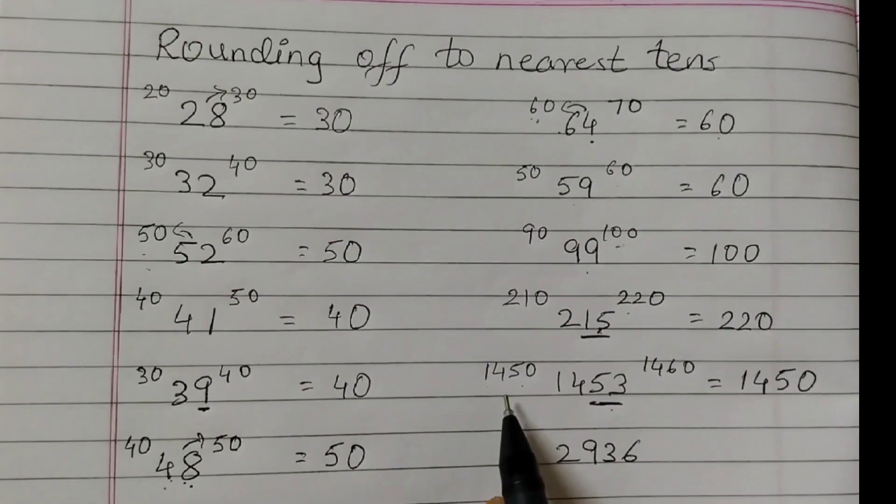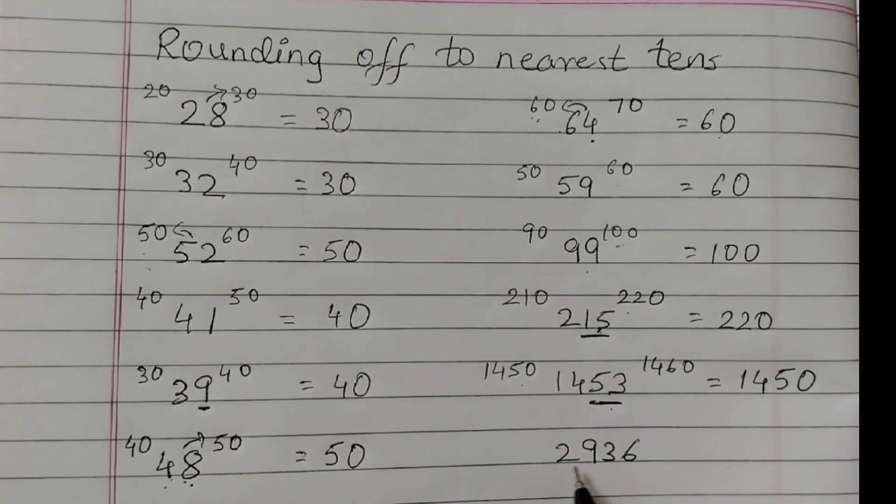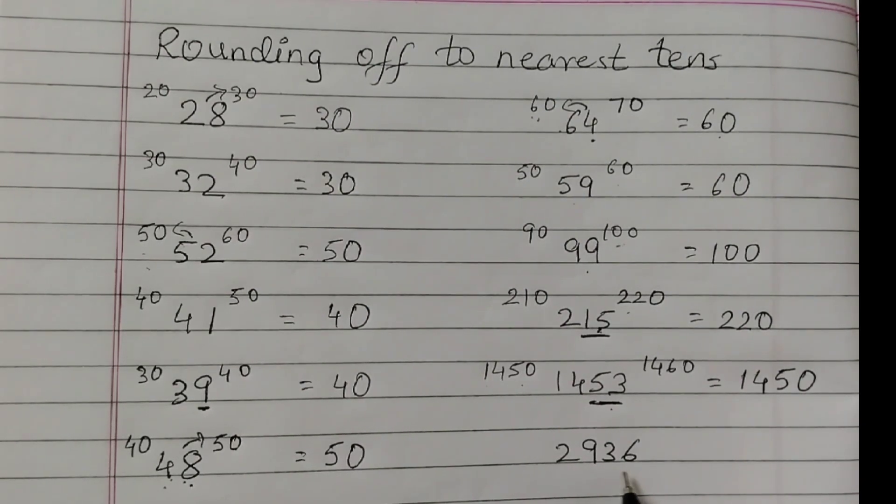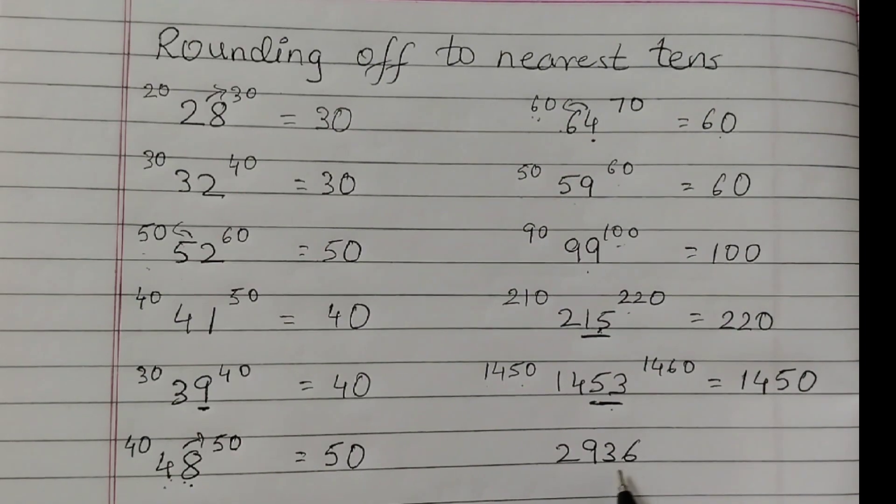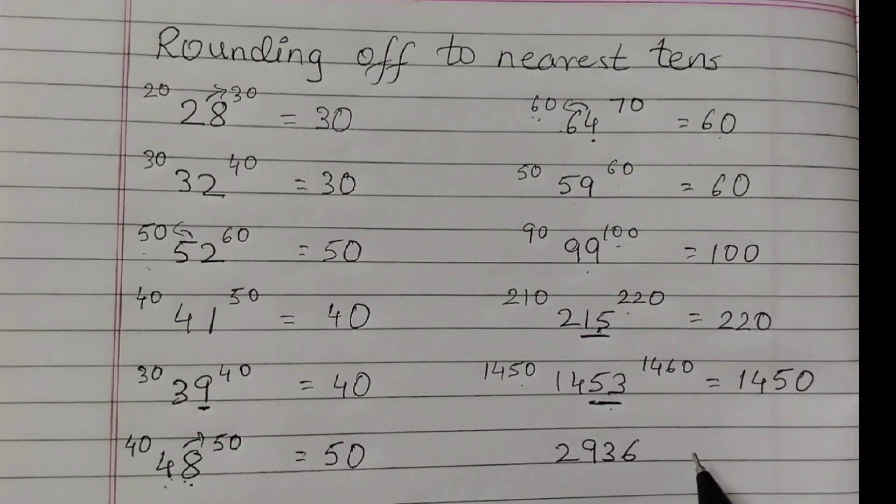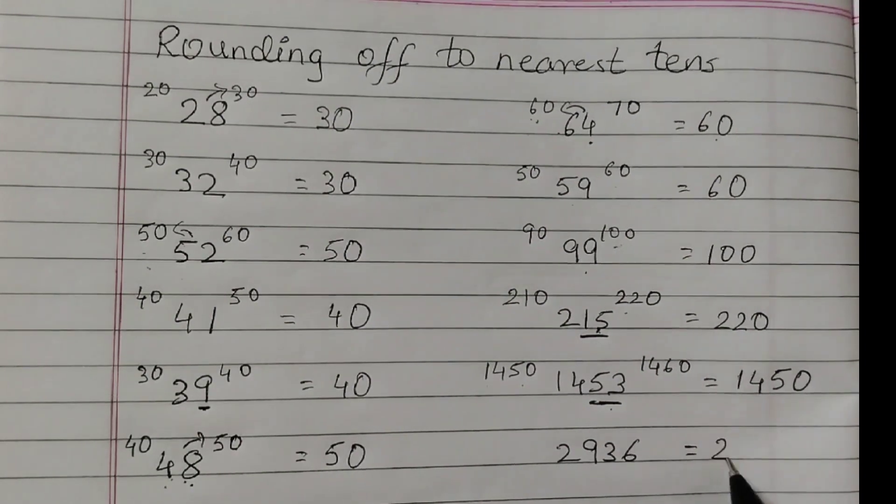Last one we will not write. We will just do in our head. 2936. You may pause the video and try yourself. So this is 36, which means it lies between 30 and 40. And 36 is closer to 40, so this would be 2940.